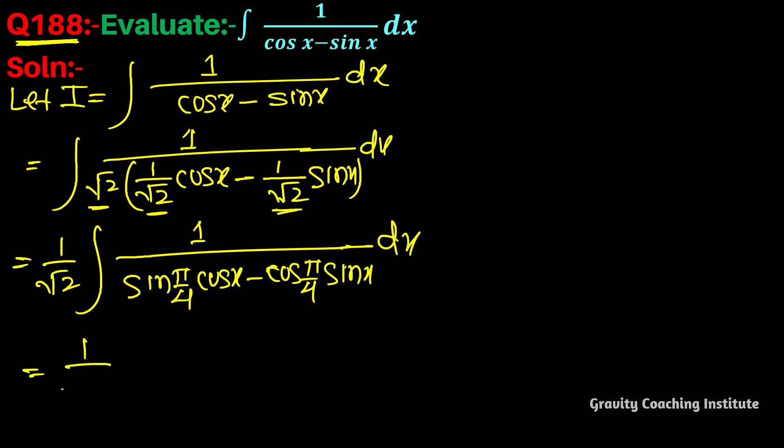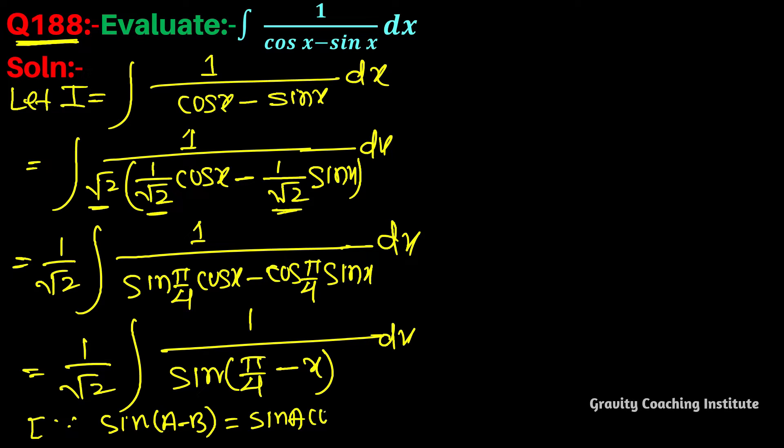Equal to 1 by root 2 into integration 1 upon, and this will be sin pi by 4 minus x. Here we have used the formula sin a minus b, which equals sin a cos b minus cos a sin b.